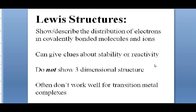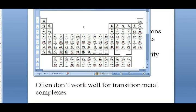One thing that Lewis structures by themselves really don't do is show three-dimensional structure. We need to use Lewis structures to determine three-dimensional structure, but a Lewis structure by itself isn't three-dimensional. We also have to apply Lewis structures in appropriate places — things like transition metal complexes really don't work very well with Lewis structures. Lewis structures tend to work fairly well to describe the bonding and structure of main group elements; they don't work very well for transition metals.